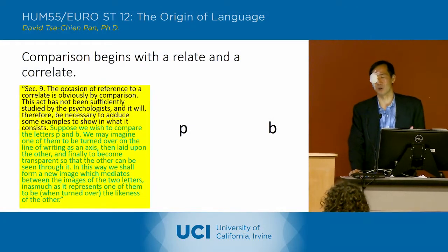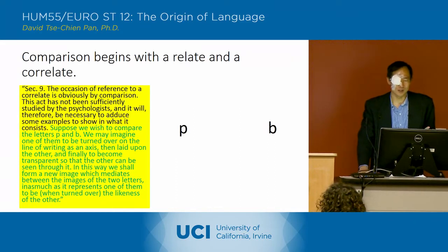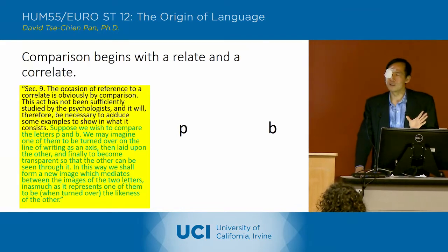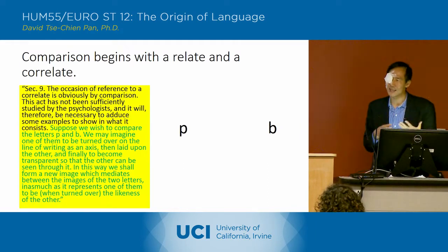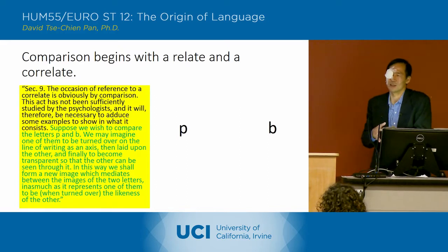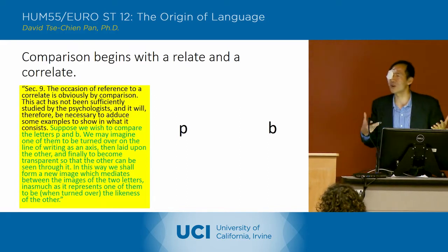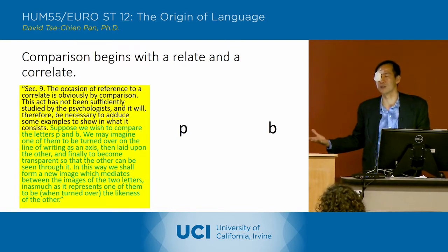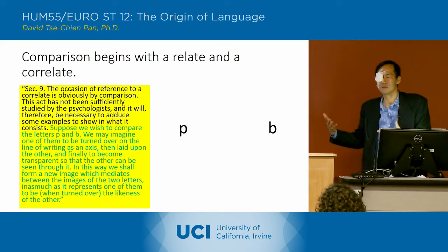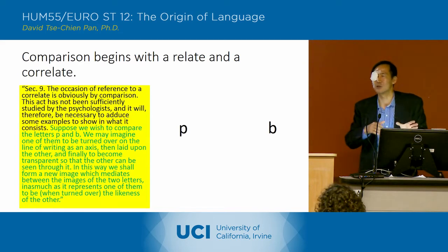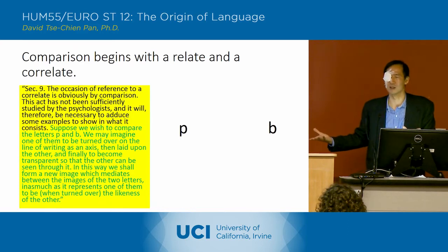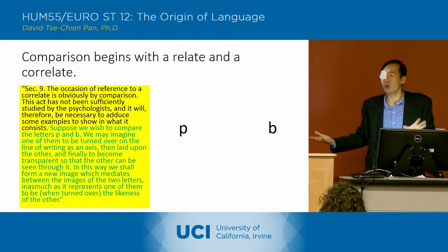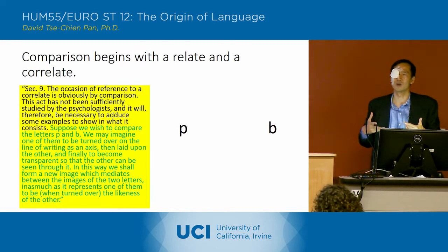Now he goes into the hard part — understanding what the relationship of one thing to another thing involves. He talks about a 'relate' and a 'correlate.' A relate is the related thing, and the correlate is that second thing. So if we have blackness, then we must have non-blackness or whiteness. The relate would be blackness, and the correlate is whiteness — that second thing necessary for the first thing to even have any meaning.